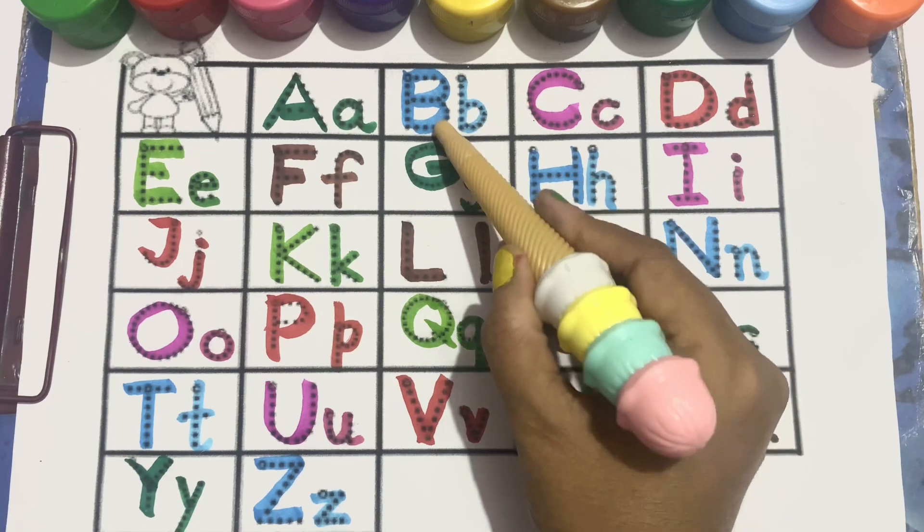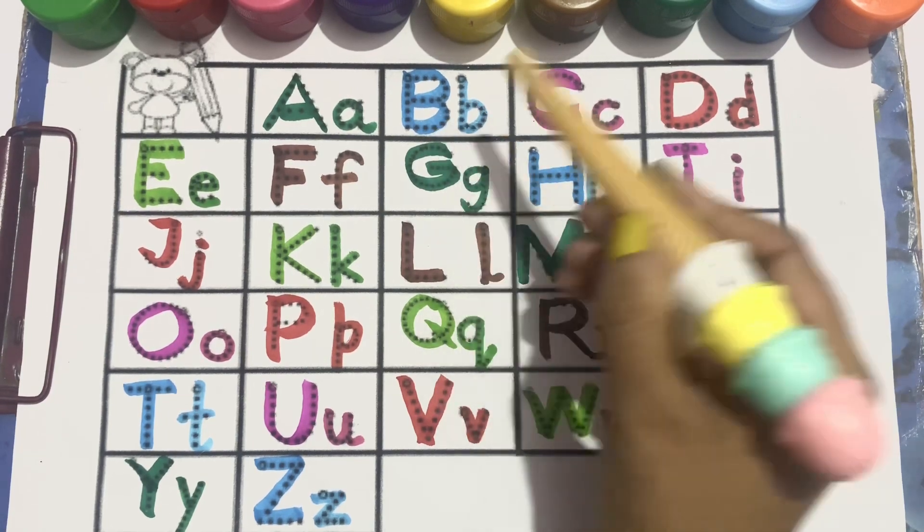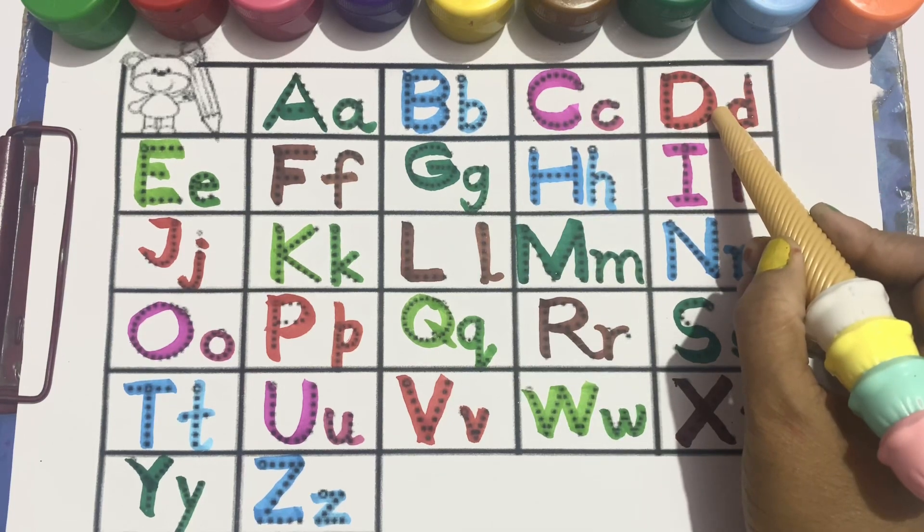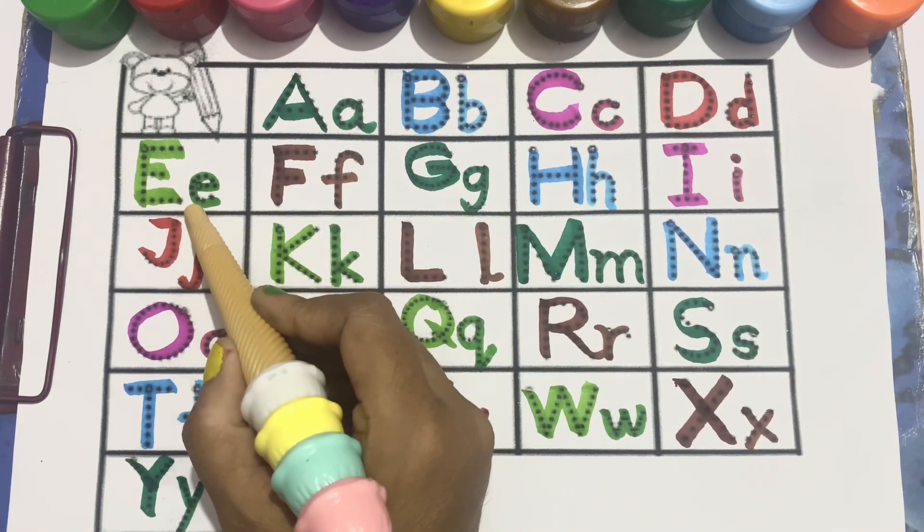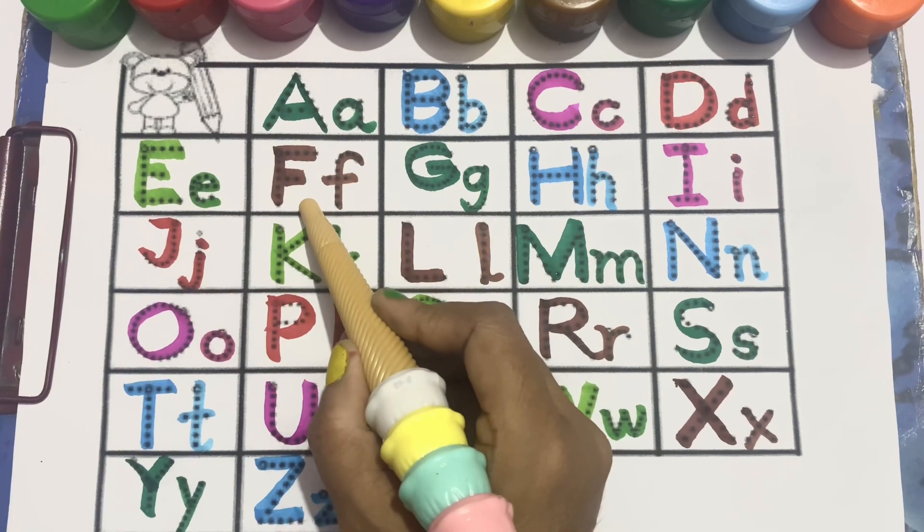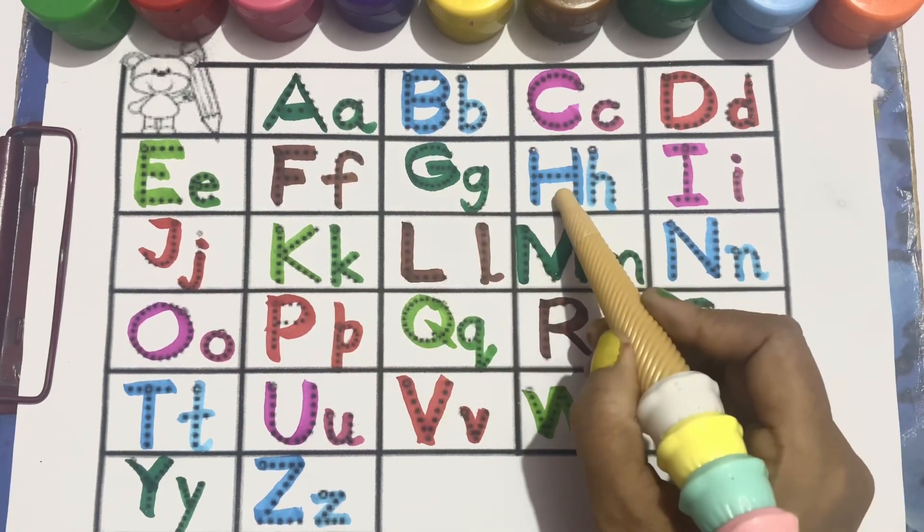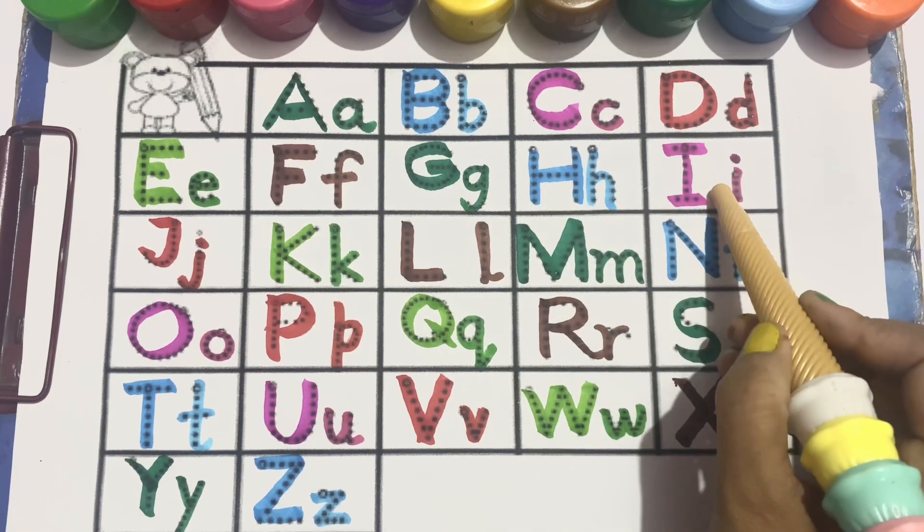B, B for ball, C, C for cat, D, D for dog, E, E for elephant, F, F for fish, G, G for girl, H for hand.